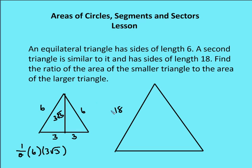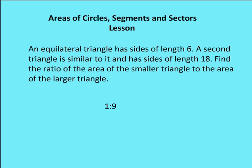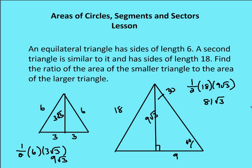I've drawn the two triangles — one with side length 6 and one with side length 18. The area of the equilateral triangle with side 6 is one-half times 6 times 3 root 3, which gives 9 root 3. For the triangle with side 18, half the side is 9, giving a 30-60-90 triangle with altitude 9 root 3. Area is one-half times 18 times 9 root 3, which gives 81 root 3. So the ratio is 9 root 3 to 81 root 3, which simplifies to 1 to 9.